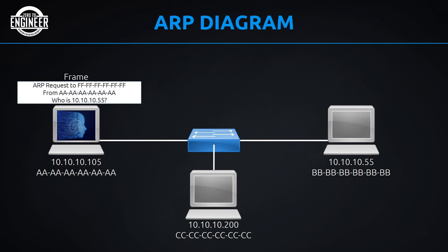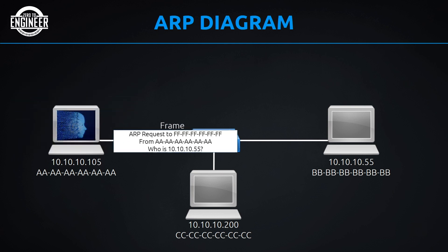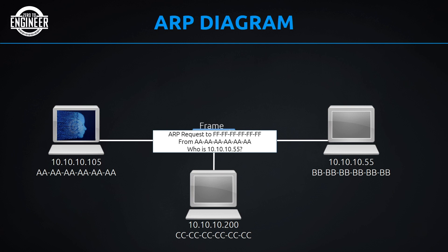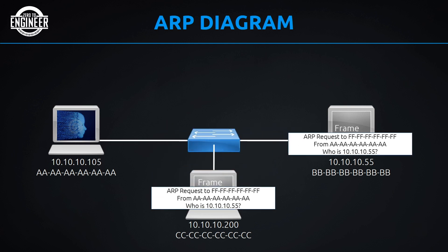The host creates a frame with the ARP request in the payload. The frame's destination MAC is FF:FF:FF:FF:FF:FF — a broadcast MAC — and the source is the host's own MAC (all As). The payload asks 'who is 10.10.10.55?' The frame is sent out to the switch, which sees the broadcast destination and forwards copies out to all connected hosts.